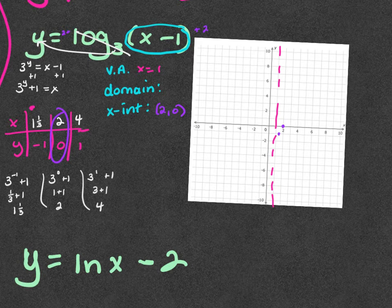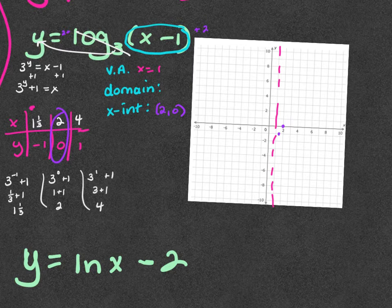If there is a negative log, you would multiply everything by negative one. The y is going to be negative, so when you pick up the y you're actually picking up a negative y.